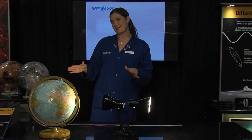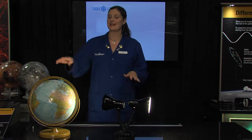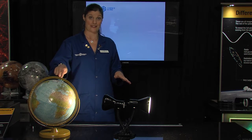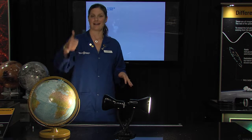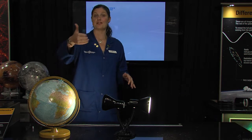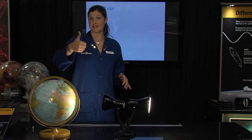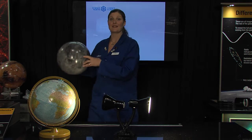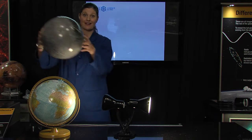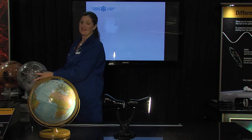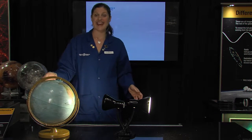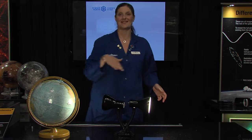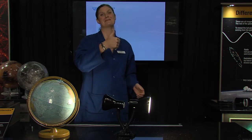I remember how to move this model around by using the right-hand rule. If I think of the North Pole of the Earth as up and I stick my thumb in that direction, the direction my fingers curl is the direction that the Moon spins on its axis, that the Moon orbits around the Earth, that the Earth spins on its axis, and the direction it orbits around the Sun. I hope that helps. Thanks.